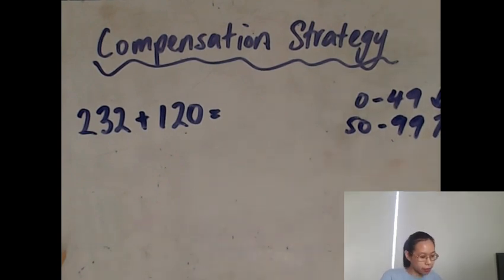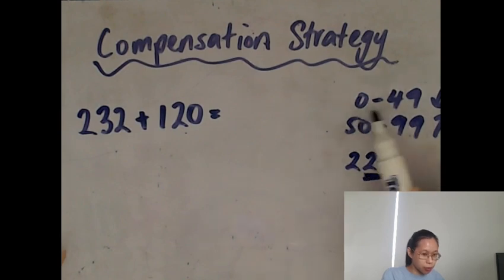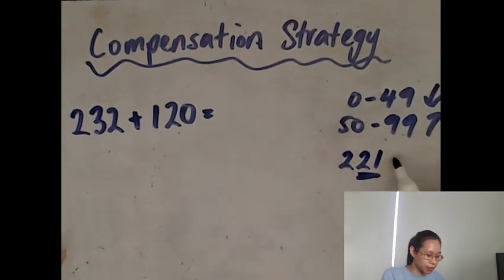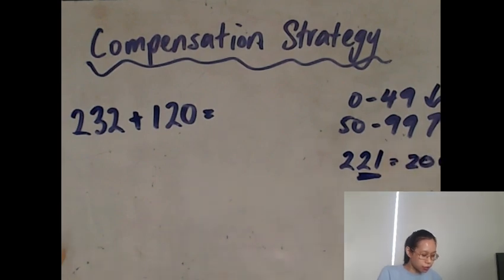Okay, so for example, if you had 221, then because the 21 is in between 0 and 49, then you round down. And if you round down to the closest hundreds, then it would be 200.